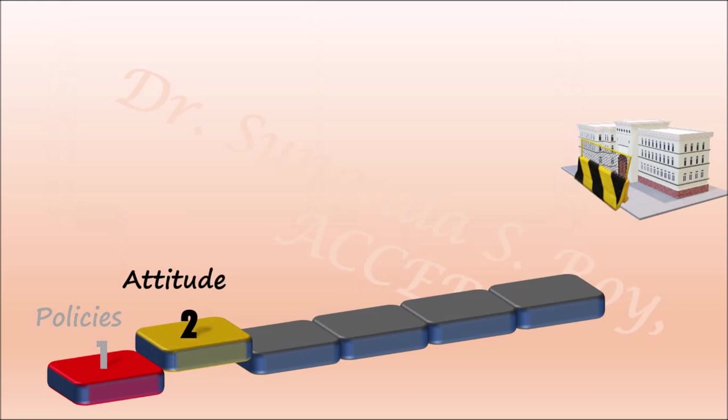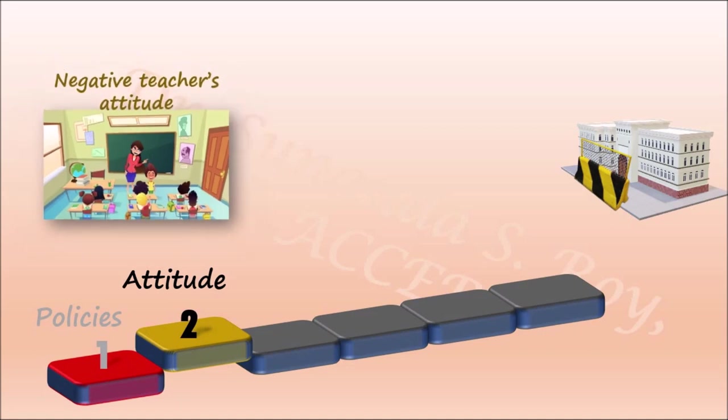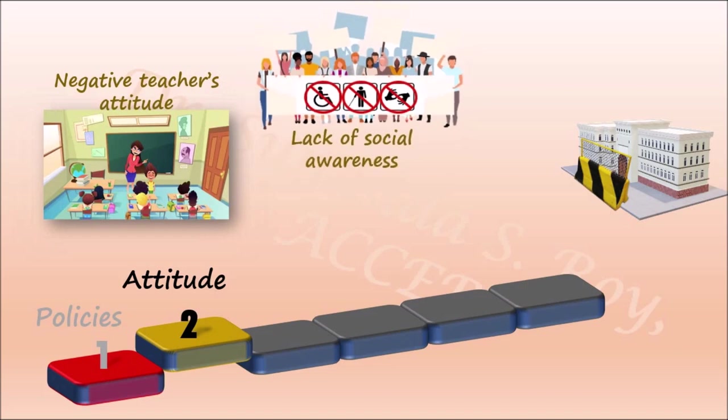The next challenge is unfavorable attitude towards inclusive education. The attitude of teachers towards inclusive education is a very important factor determining the success of inclusion. Teachers with a negative attitude may not support students with disabilities, which other students copy. This makes the differently abled student feel uncomfortable and not accepted by their peers. There is also lack of social awareness regarding different types of challenges faced by children and adults.